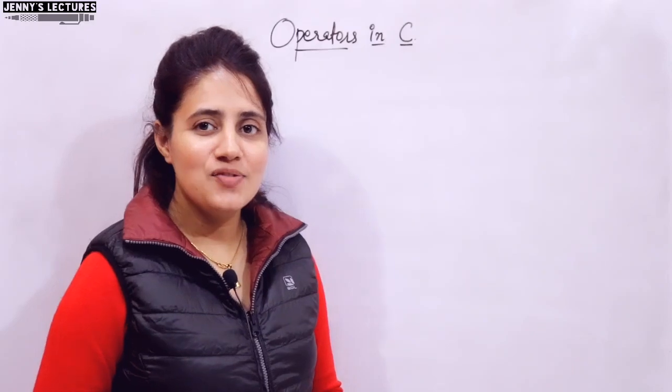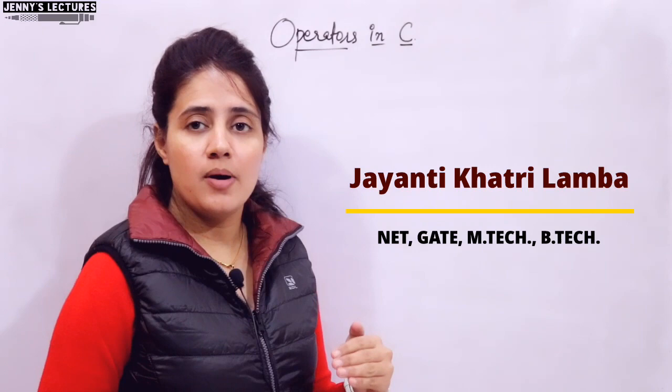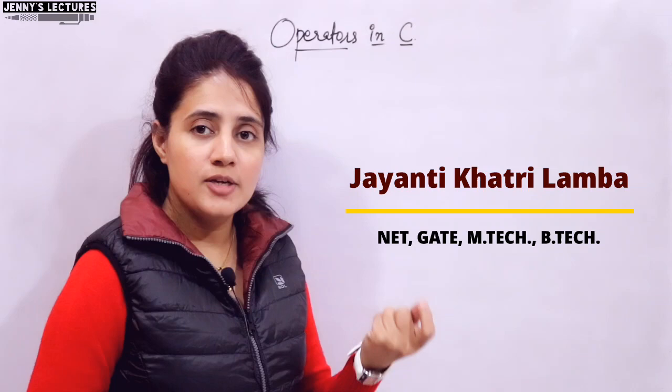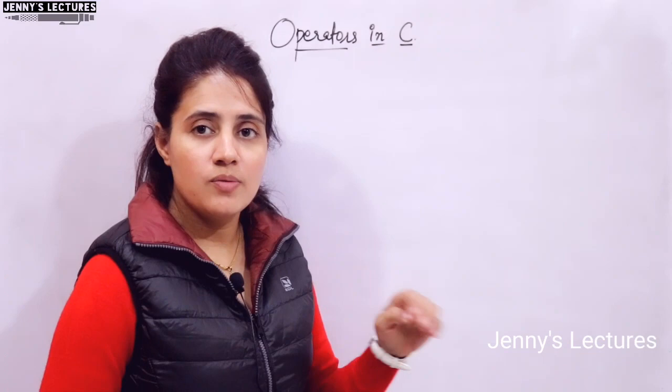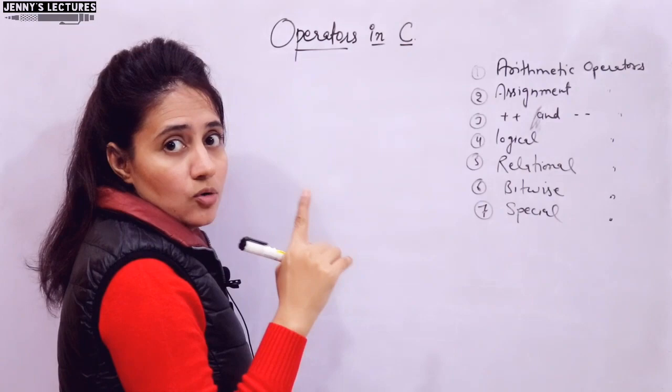In this series on learning programming in C, in the previous video I discussed types of operators based on operands: unary, binary, and ternary — three types. In this video I'll be talking about types of operators based on operations. Based on which operations you perform, you can classify operators, and there are seven types of operators based on operations. We are going to discuss all types one by one.